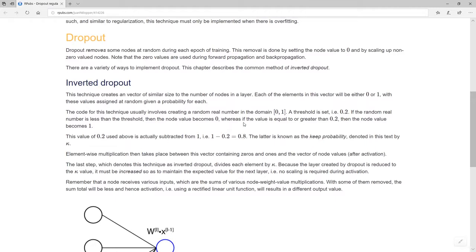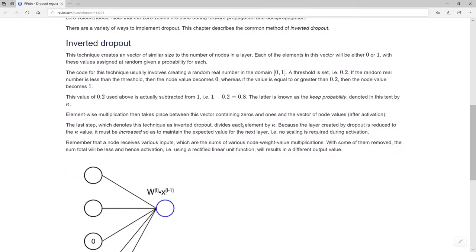We set this value, say 0.2. If that random value is less than 0.2, we turn that value in the vector into a zero. If it's 0.2 or more, it'll become a one. So we'll have this vector of zeros and ones that is random. Then we have element-wise multiplication. Therefore, some of the values that remain in that layer after activation—remember this happens after activation—are going to be either the actual value or a zero.